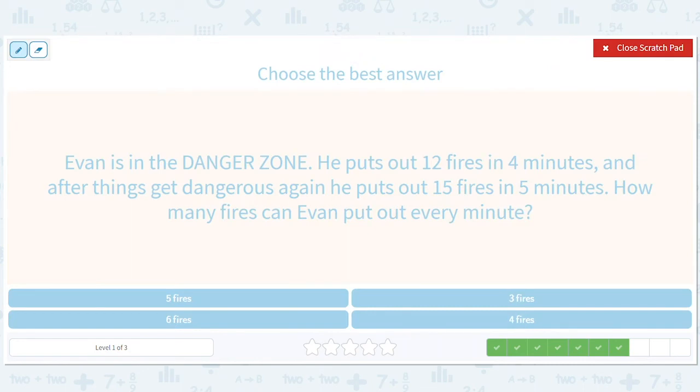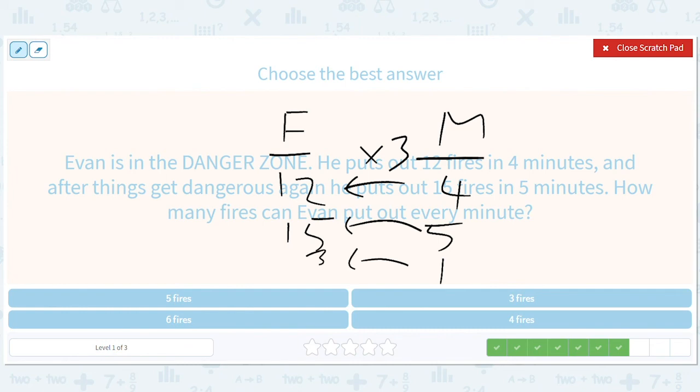So we've got 12 fires. We've got minutes. 12 fires, 4 minutes. 15 fires, 5 minutes. How many fires can Evan put out every minute? So one minute. So this is times 3. This is also times 3. You could divide 12 by 4 if you want to get that. And so this will just be 3 fires per minute.